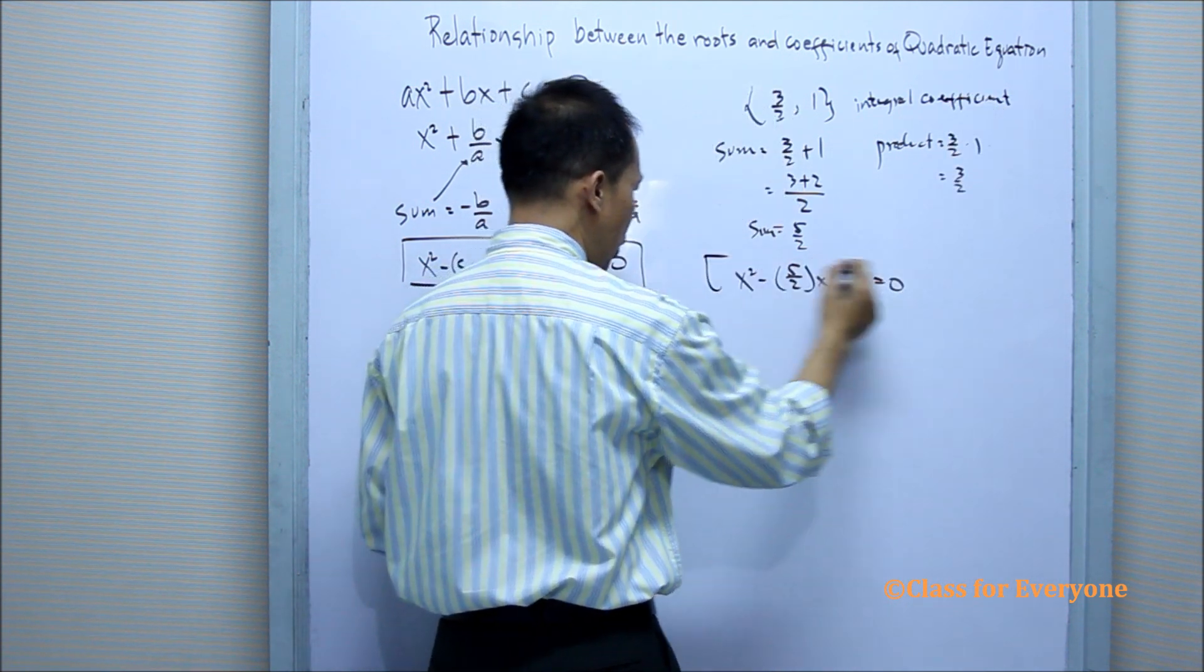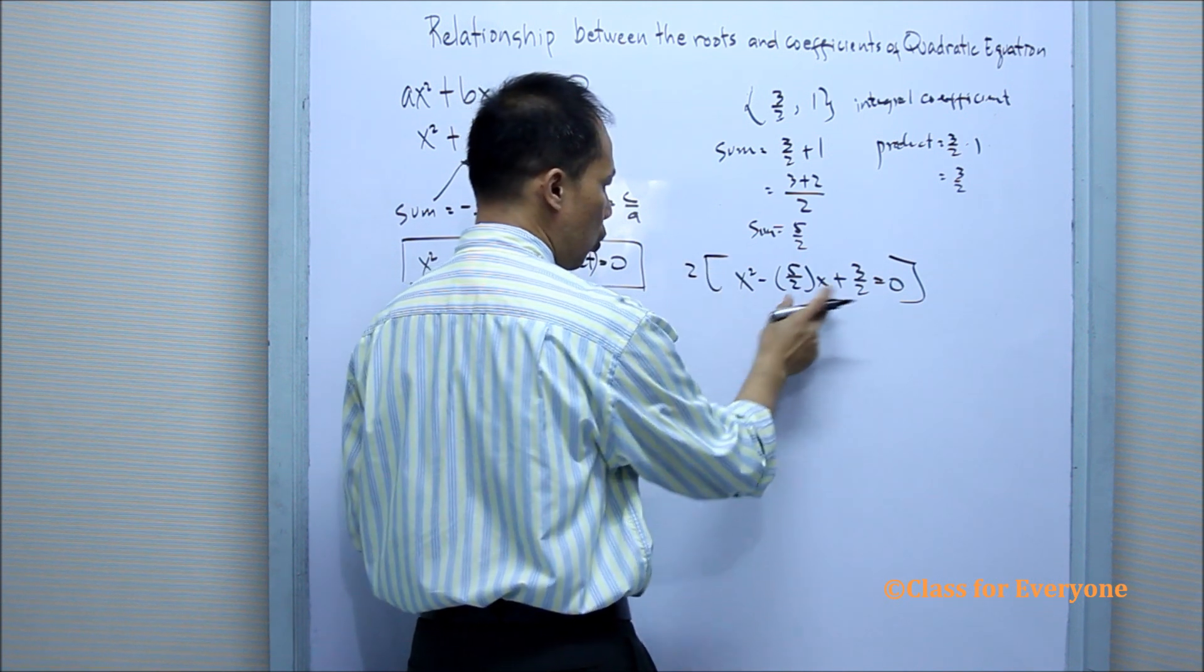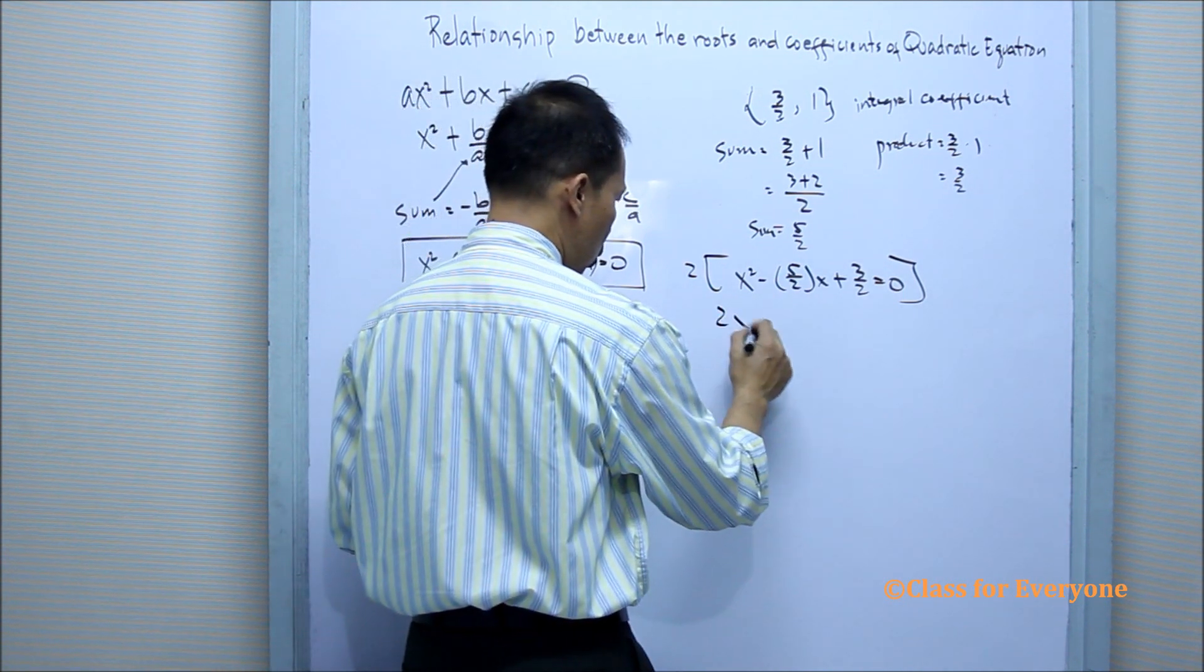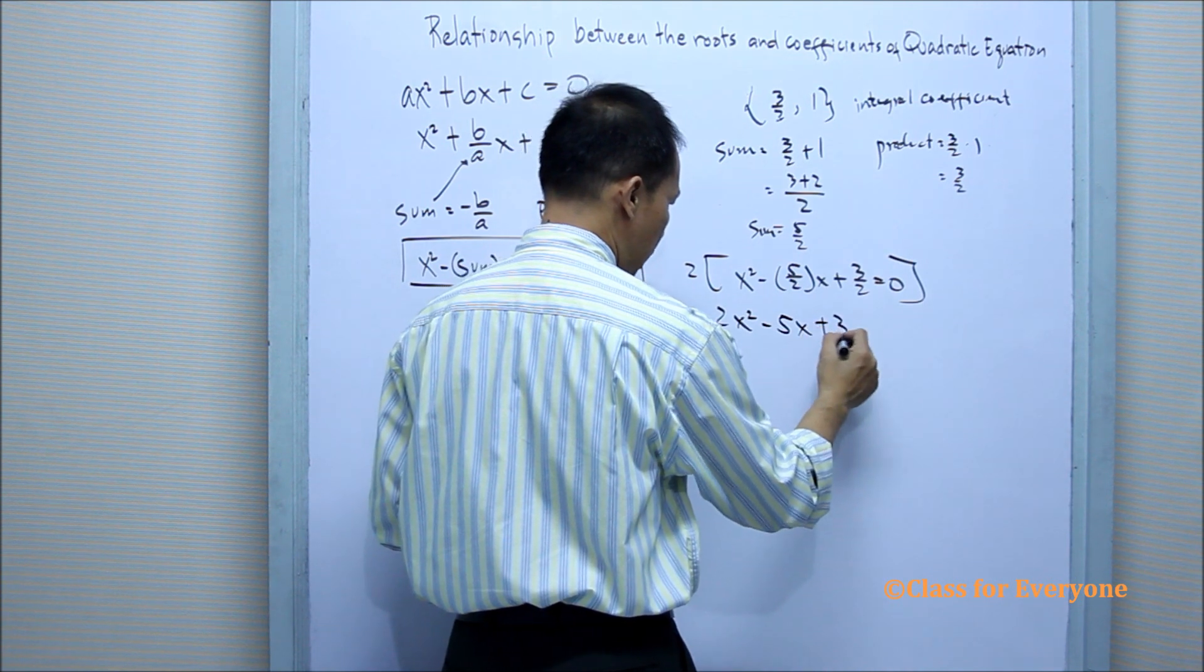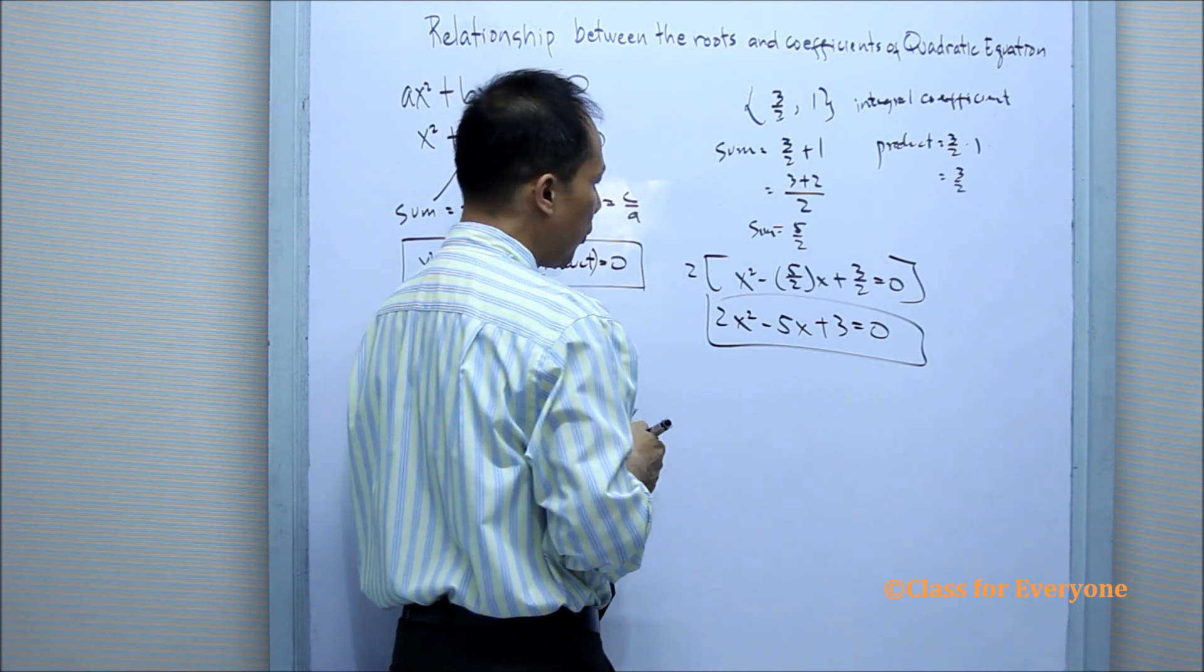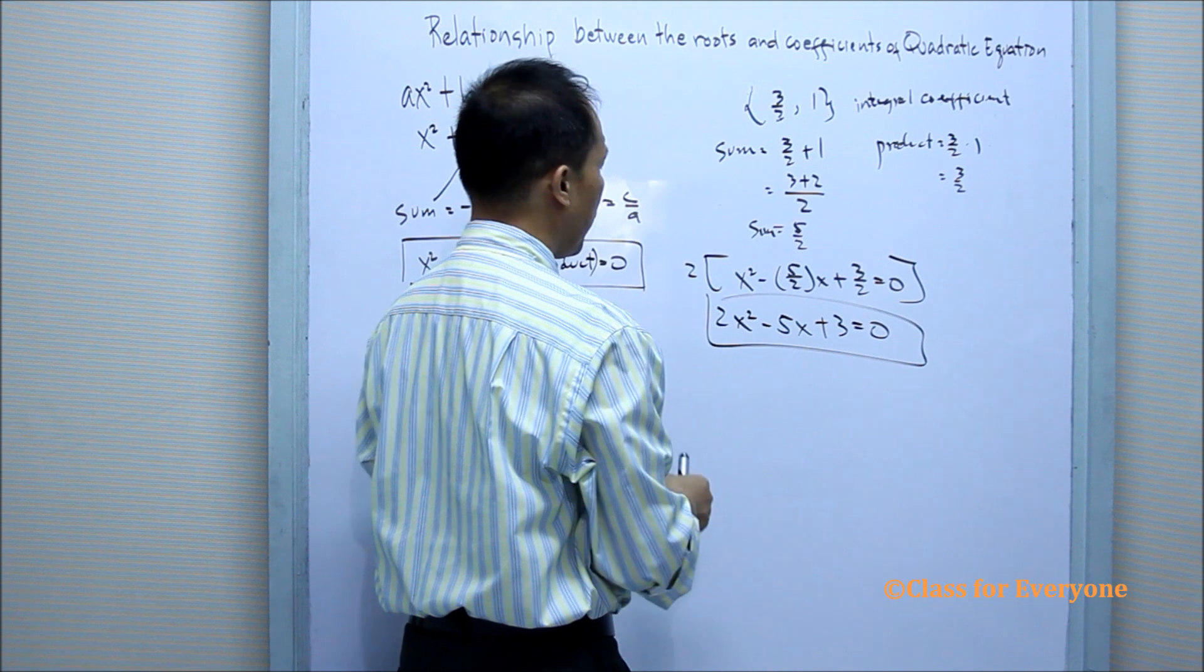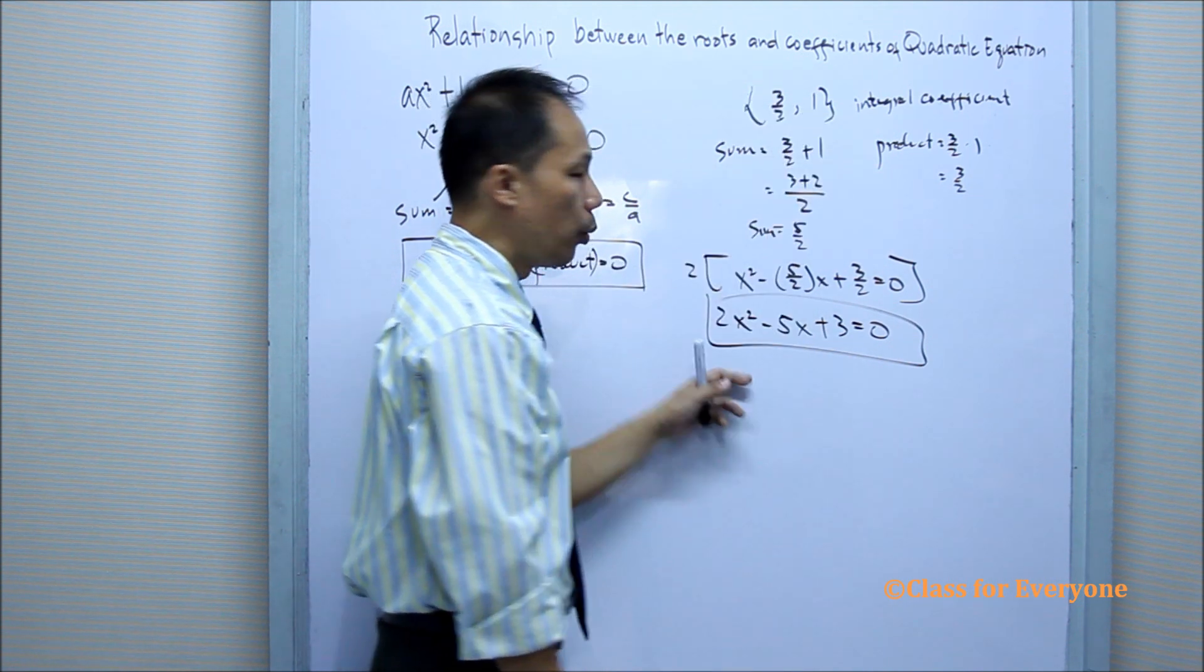We will multiply all the terms by 2. By distributive property, we have 2x² - 5x + 3 = 0. And that is the equation of the quadratic equation where the roots are equal to 3/2 and 1.